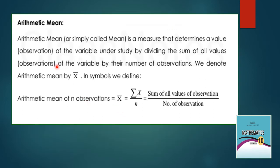The first one is arithmetic mean. Arithmetic mean, or simply mean, is a measure that determines the value by dividing the sum of all values of the variable by the number of observations. We denote arithmetic mean by x-bar. By definition: x-bar equals summation of x divided by n, where summation x is the sum of all observations and n is the number of observations.